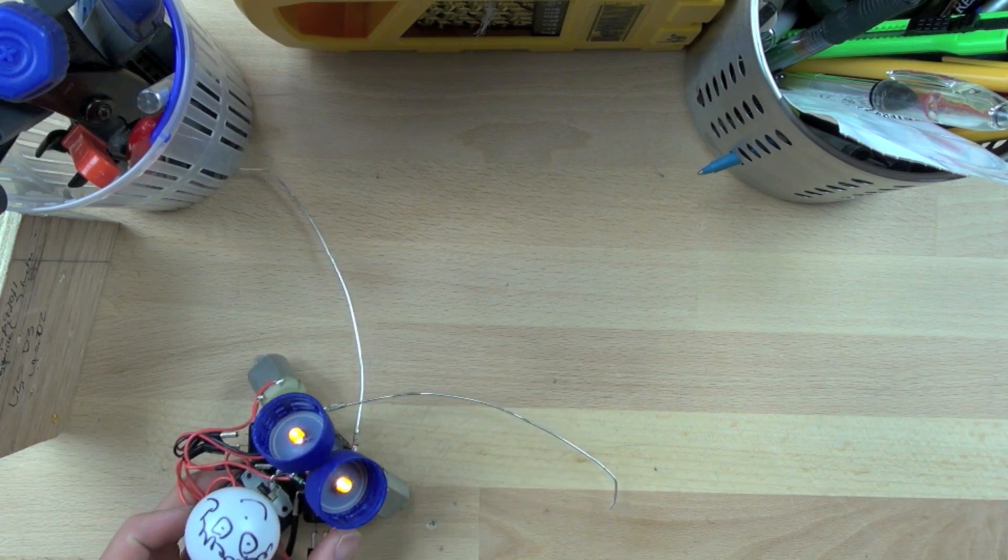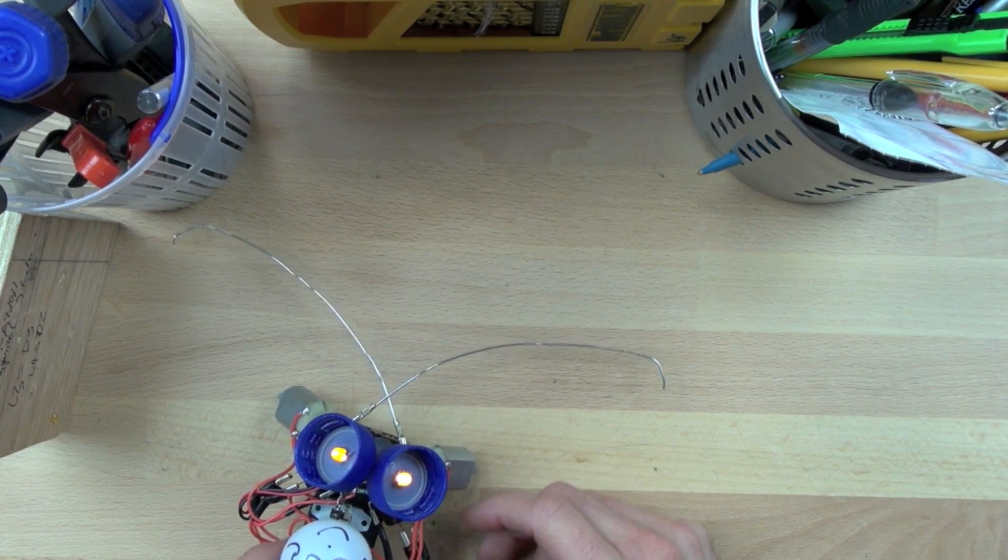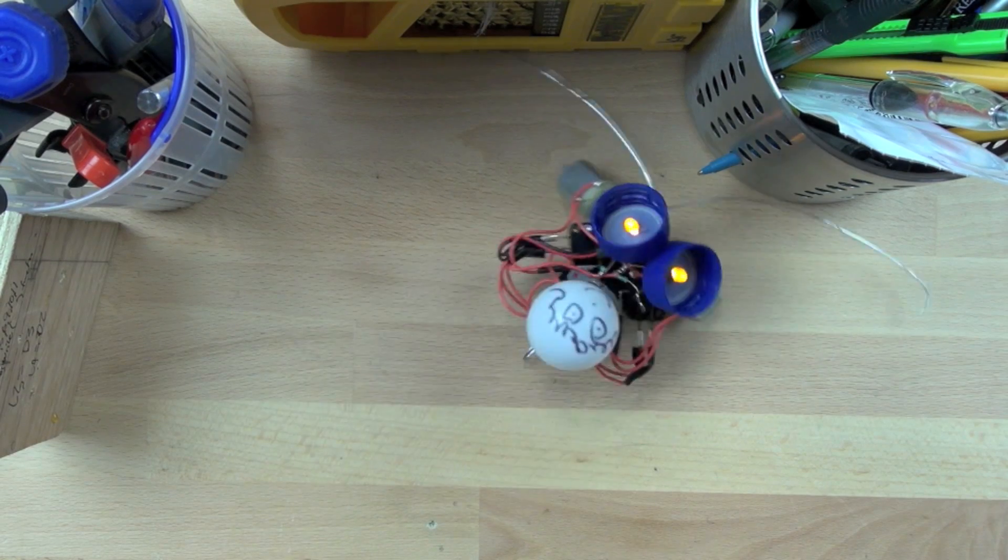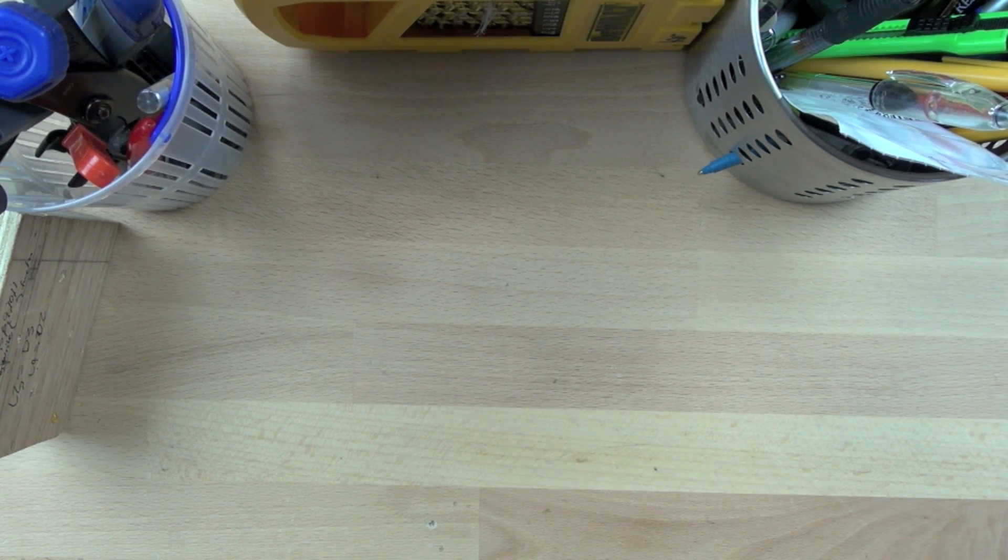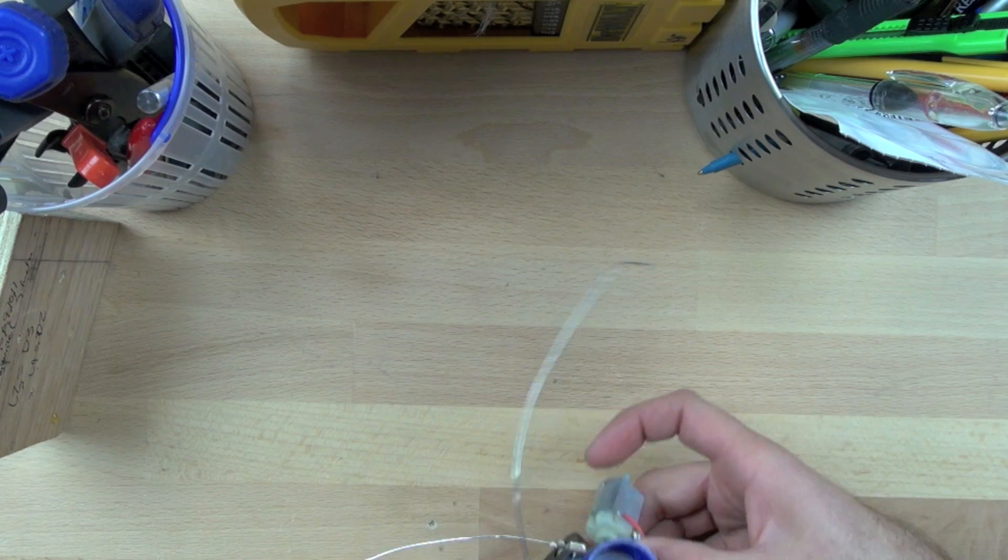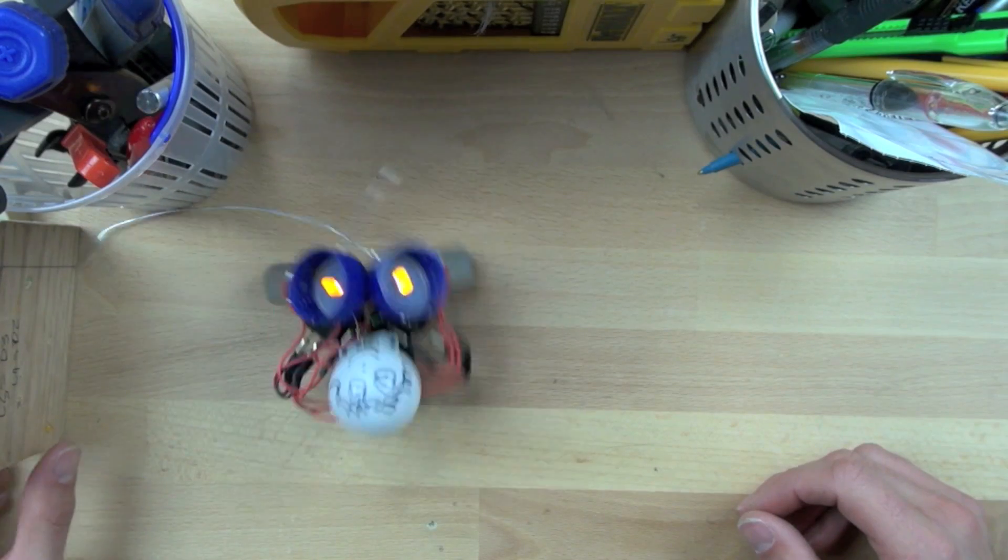It's got two glowing eyes and bottle caps for the eyes. We're going to turn it on and you can see it bumps up against walls and moves out of the way. This robot doesn't require any programming at all. It's just a really simple switch-driven robot.